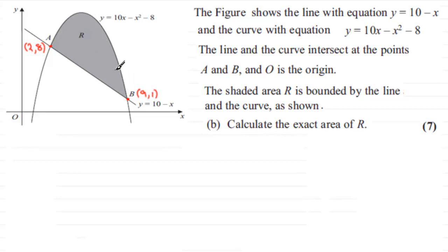You'll also notice that I've updated the diagram with the coordinates that we had to find for the points A and B in the previous part. They were (2,8) and (9,1) respectively. So if you'd like to give this a go, just pause the video, come back when ready, and I'll run through the work solution.